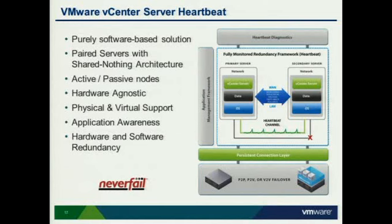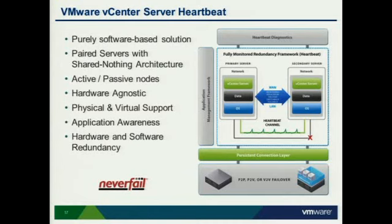This brings me to the last option — vCenter Heartbeat. I work for VMware so I'm probably slightly biased, but I truly believe this is the best option for vCenter availability. Maybe not the cheapest or the easiest, but if you want the best way to protect vCenter, Heartbeat is going to be the ticket. It's purely software-based — you install Heartbeat on two nodes, a primary and secondary. There is really nothing shared between those two, so you can afford the loss of either node without affecting the other. It's an active-passive setup with no load balancing.